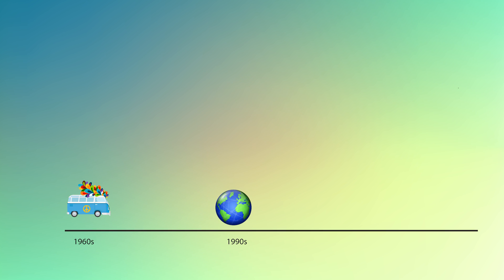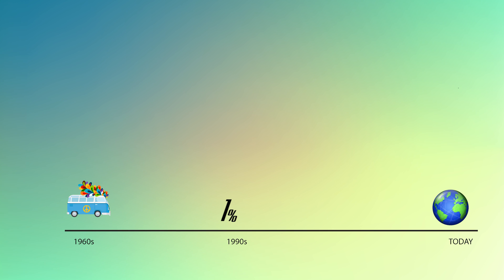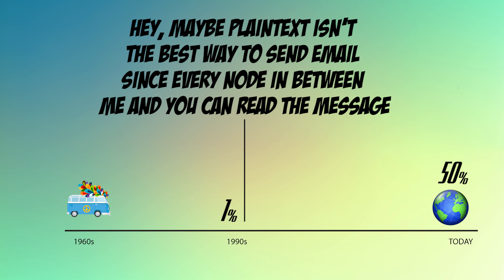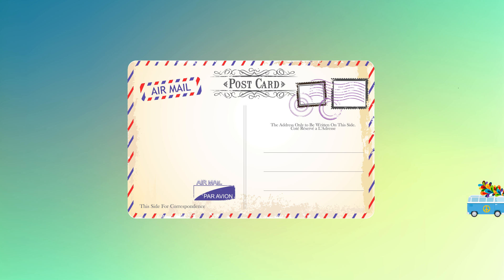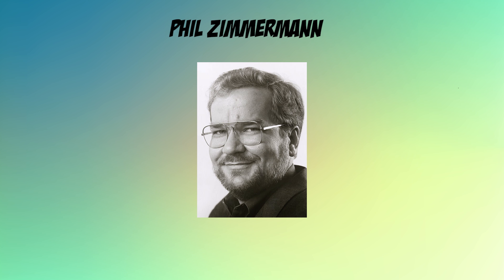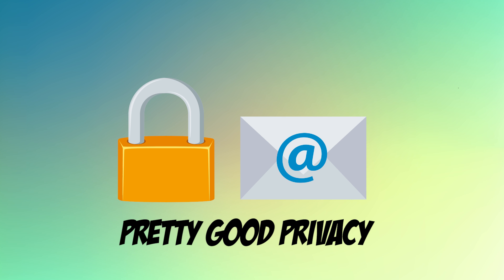By the very early 90s, less than 1% of the planet had internet access, unlike today where about half the population is online. Then in 1991, people figured maybe plain text isn't the best way to send emails, since every node in between can read the message — kind of like a postcard. A wizard by the name of Phil Zimmerman came around and invented encrypted email and called it PGP, for Pretty Good Privacy. And it was pretty good, but it was hard to use, and in the nearly three decades since, it hasn't really gone mainstream.